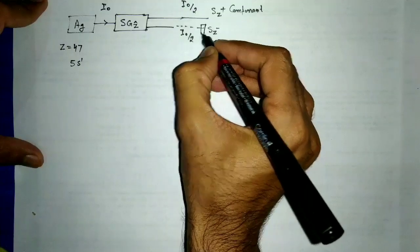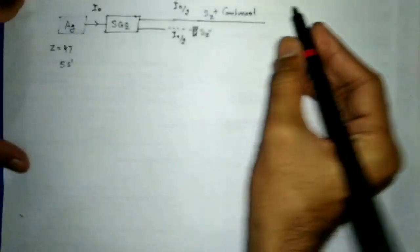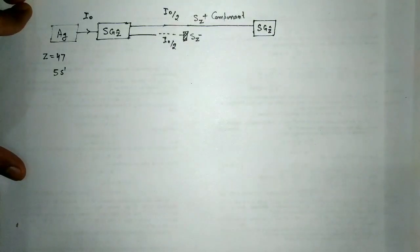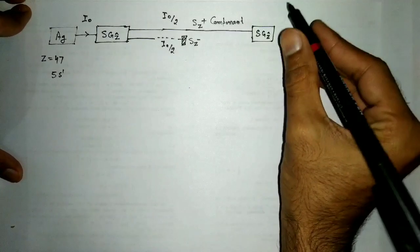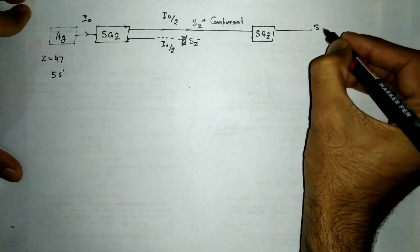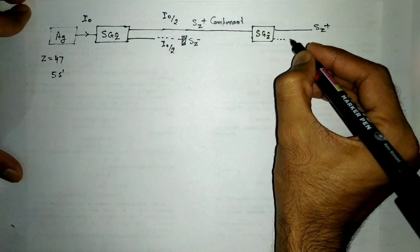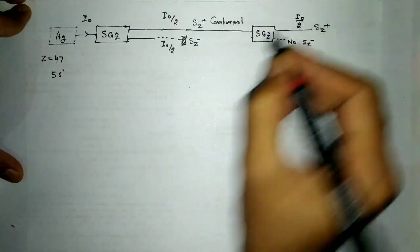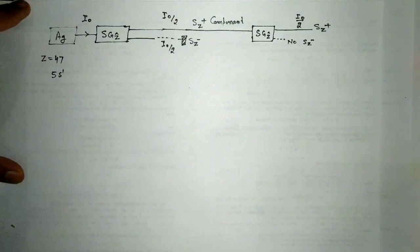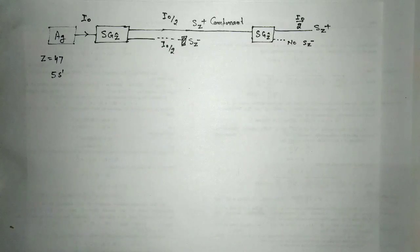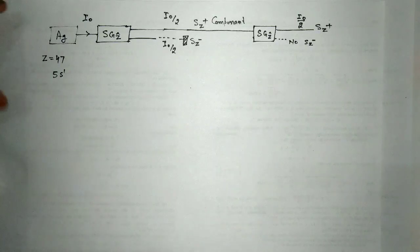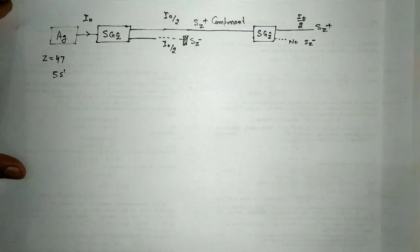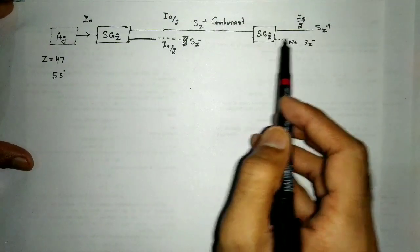Now, if the Sz− component is blocked and the Sz+ component is passed through a second SG arrangement along the Z-axis, then we get only the Sz+ component and no Sz− component. The intensity of this Sz+ component remains I₀/2. This is identical to optical polarization, where intensity becomes I₀/2 after the first arrangement, and since this is still the Z component, it remains I₀/2.